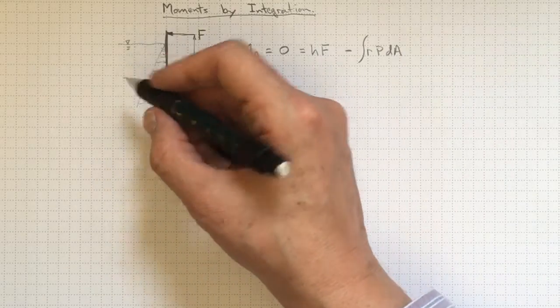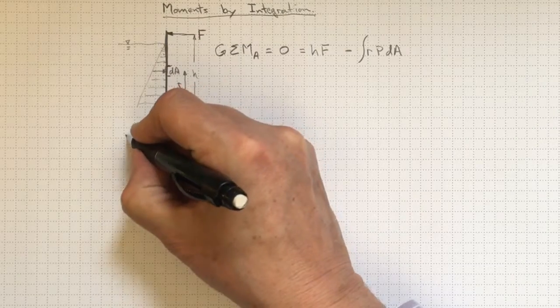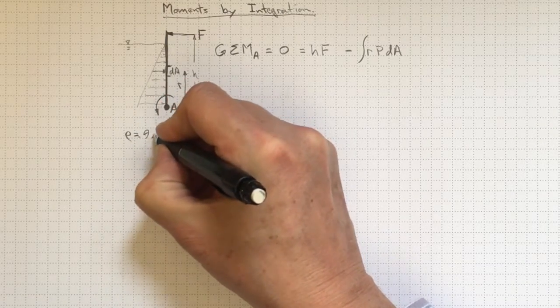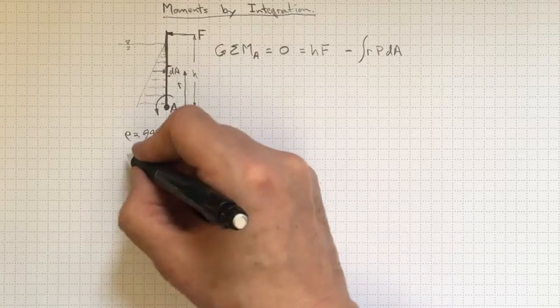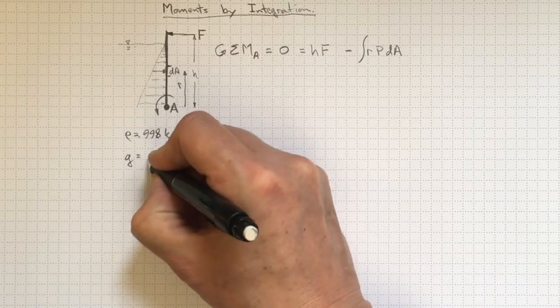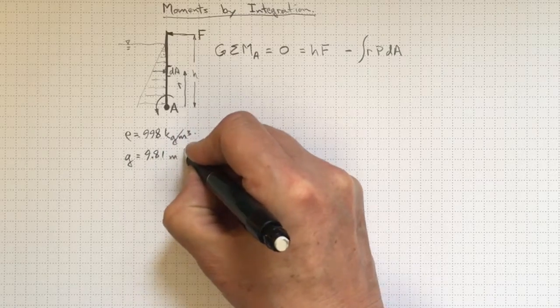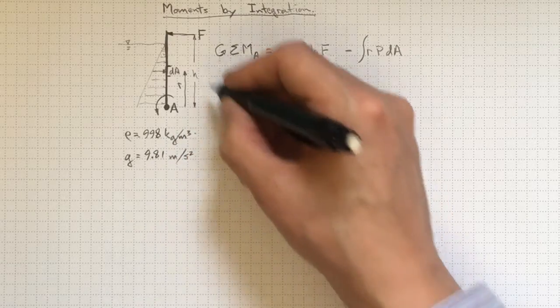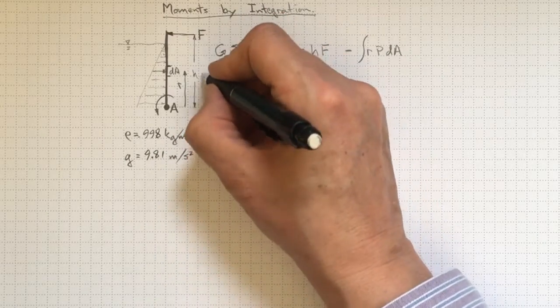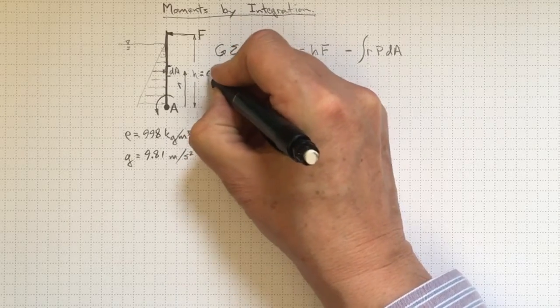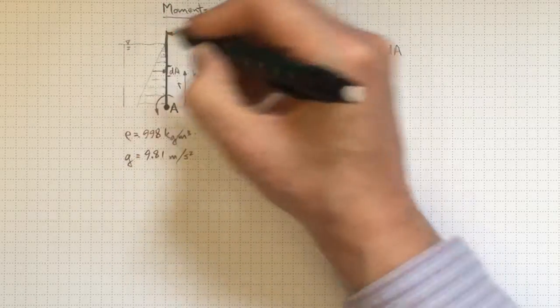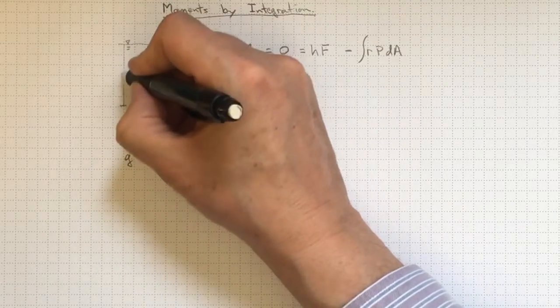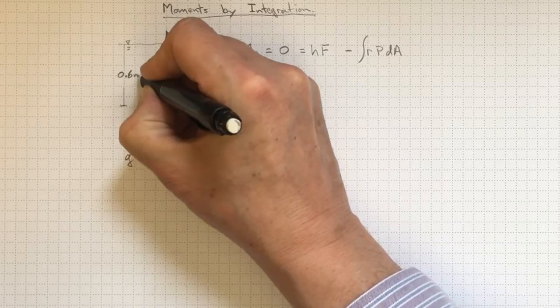We need to know what the fluid is. Let's say it's water, so the density is 998 kilograms per cubic meter, and we know that gravity is 9.81 meters per second squared. We need to put some dimensions on here. So let's say that H is 0.7 meters, and that the depth of the water measured up from point A here is 0.6 meters.